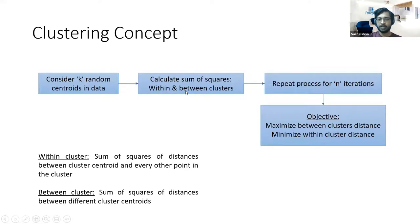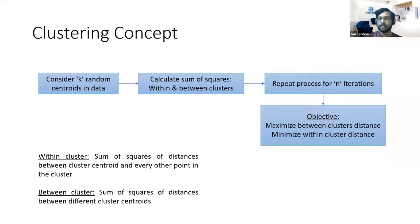We calculate two types: the within-cluster sum of squares and the between-clusters sum of squares. We repeat this for n iterations — also something we specify. The objective is to maximize the between-clusters distance and minimize the within-cluster distance. Within a cluster, all observations should be as similar as possible; between clusters, the groups should be as different from each other as possible. The within-cluster distance is the sum of squares of distances between each point and its cluster centroid; the between-cluster distance is the sum of squares of distances between different cluster centroids.